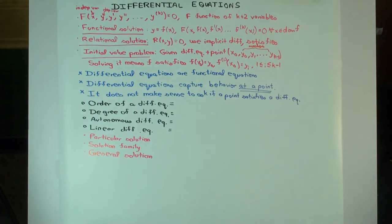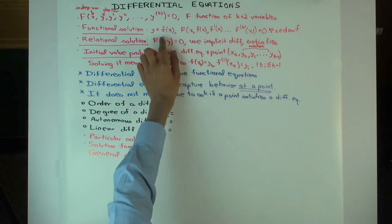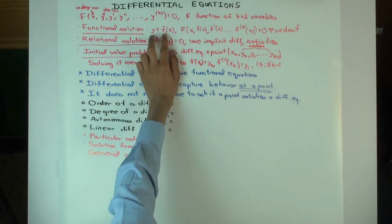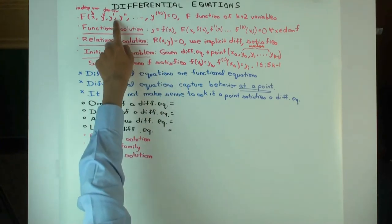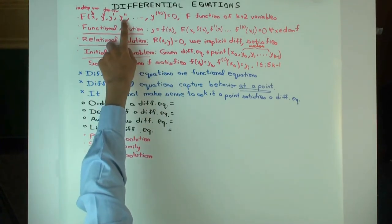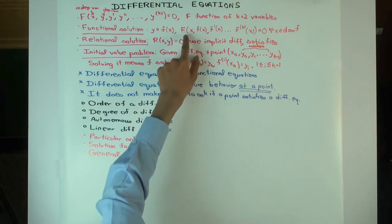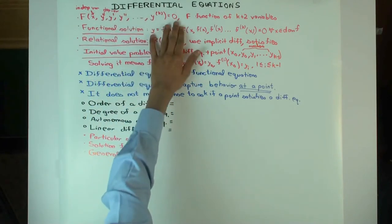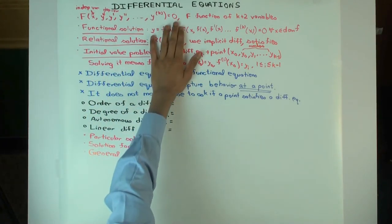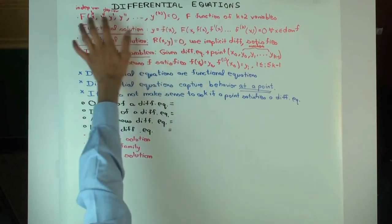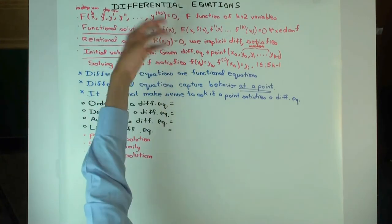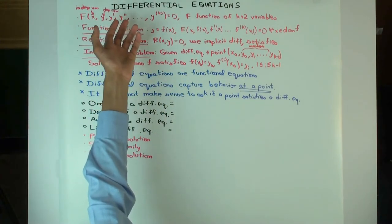What does it mean to solve such a differential equation — to find a solution? Well, it's a function f such that when you put y as f(x), y prime as f'(x), y double prime as f''(x), and so on, and when you plug them into the expression, you get zero for all x in the domain of the function. So it's like saying you find a function such that this equation is true as an identity in x — it's true for all x.